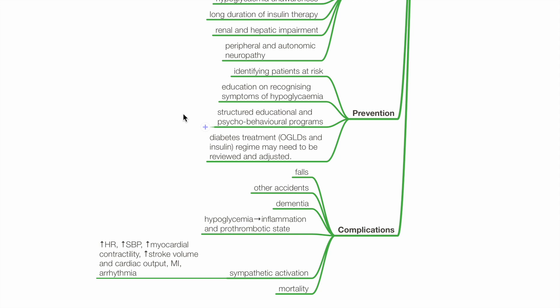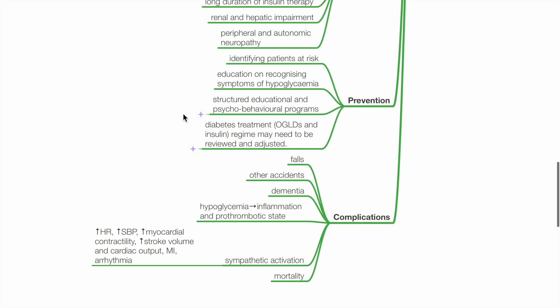Complications of hypoglycemia include falls, other accidents, dementia, inflammation and pro-thrombotic state, sympathetic activation with tachycardia, hypertension, increased myocardial contractility and oxygen consumption, increased cardiac output, MI and arrhythmia, which may lead to mortality.